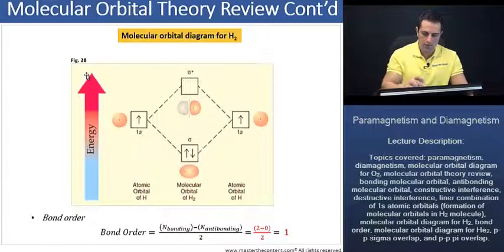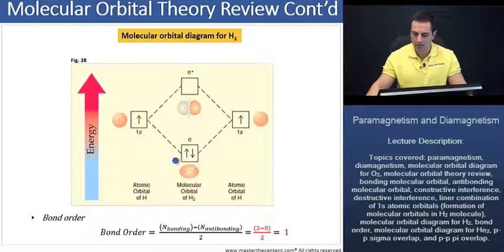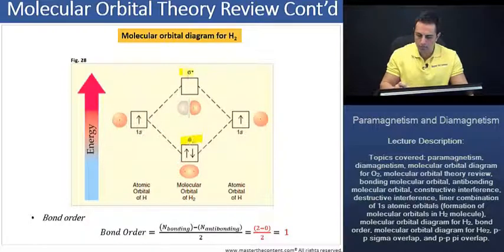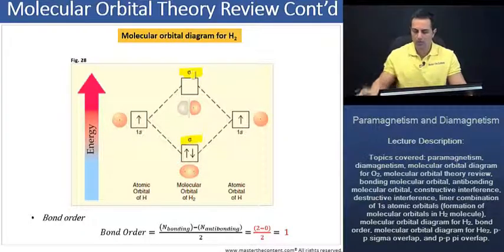Let's take a look at the first rule for the Aufbau principle. That was orbitals with lower energy fill before orbitals with higher energy. Now, if we see here, we see that that's true as our sigma orbital fills before our sigma star orbital.